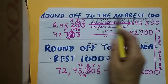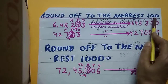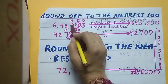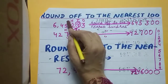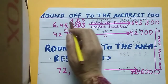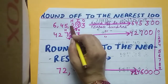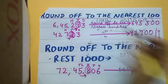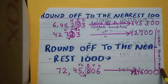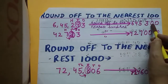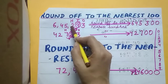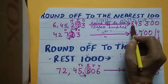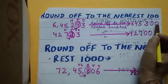Now, round off to the nearest hundred. Write down the places: ones, tens, hundred. To round off to the nearest hundred, look at the digit just right of the hundreds place, which is the tens place. Circle it. Here the digit is nine — nine is greater than five, so it will become zero. The hundreds place will increase by one, so two will become three. After tens, the ones place will also become zero.